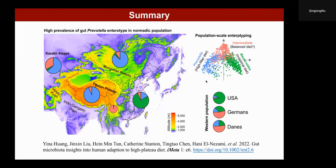The Prevotella enterotype is a quite different enterotype and has been documented as a pro-inflammatory enterotype in low altitude populations clinically. Arthritis has been commonly associated with the Prevotella enterotype, and we know that the Tibetan population has a very high prevalence of arthritis as well, which has been documented in a comprehensive study in China. We therefore suggest that a comprehensive evaluation and analysis of high plateau people such as the Tibetan population is needed, considering their dietary pattern and gut microbiota.